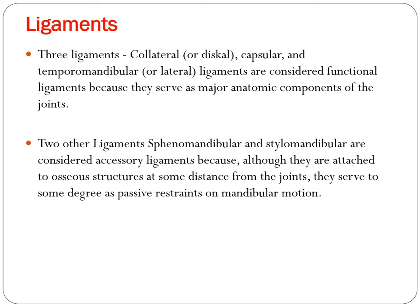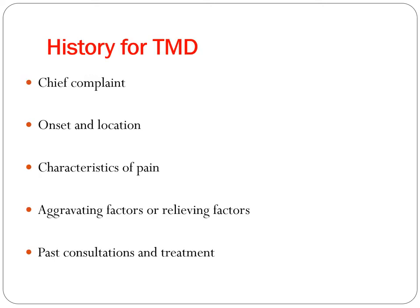For the TMJ disorder history, we first check the chief complaint — how long, when did the pain start, the duration, onset, and location of pain. We also ask about the character of pain: whether it is a dull pain or sharp shooting pain.